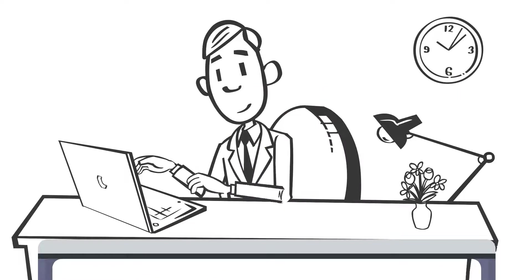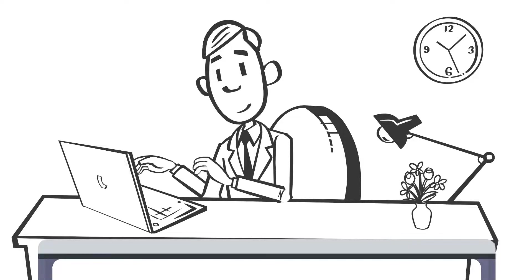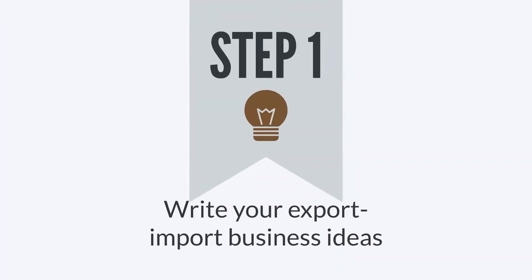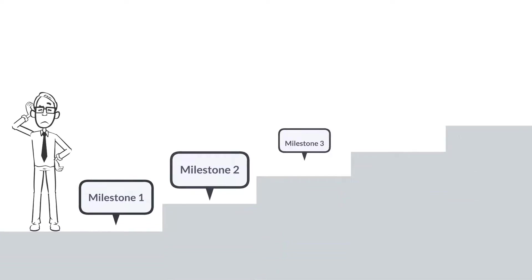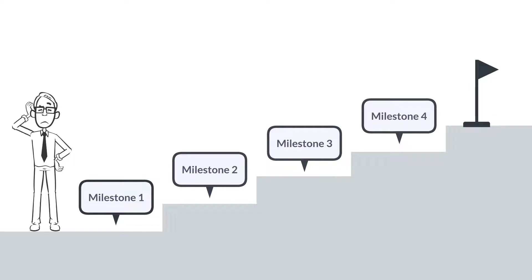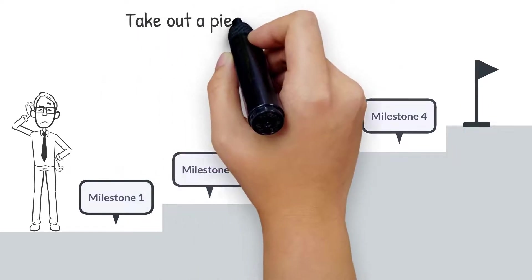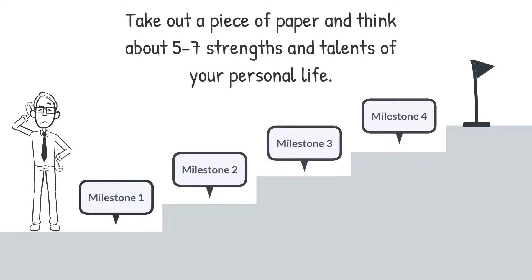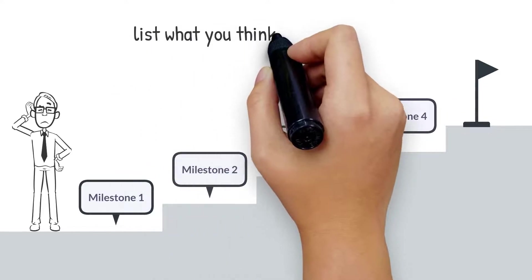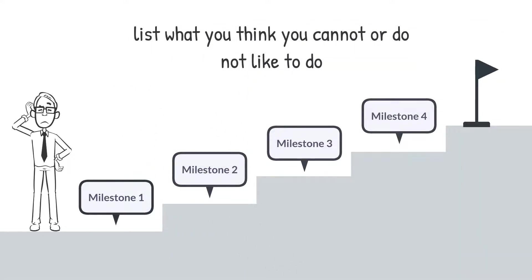The following shows you how to make the Export-Import Business Plan in the easiest way. You can use this method to write a good plan. Step 1: Write Your Export-Import Business Ideas. The first step is to write about your Export-Import Business Idea. Take out a piece of paper and think about 5 to 7 strengths and talents of your personal life. Then list what you think you cannot or do not like to do. The more you think about it, the more you write, the richer the content.